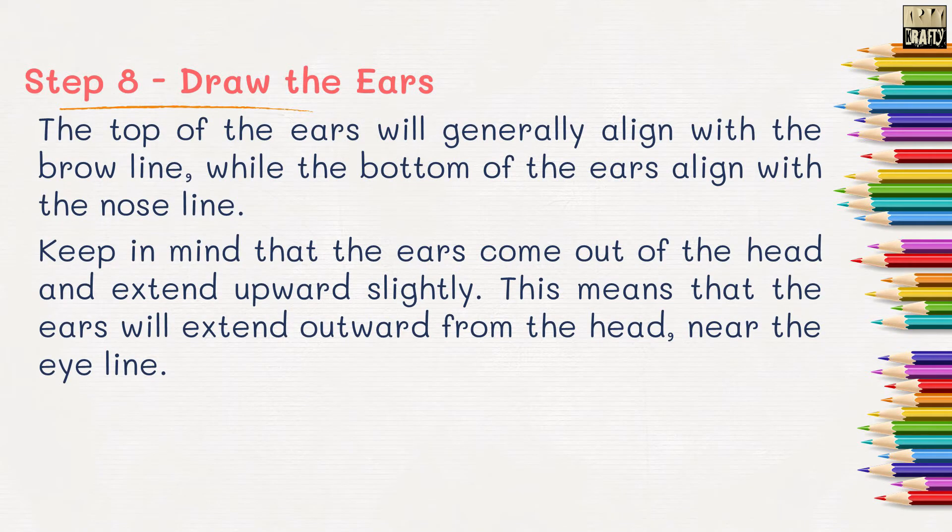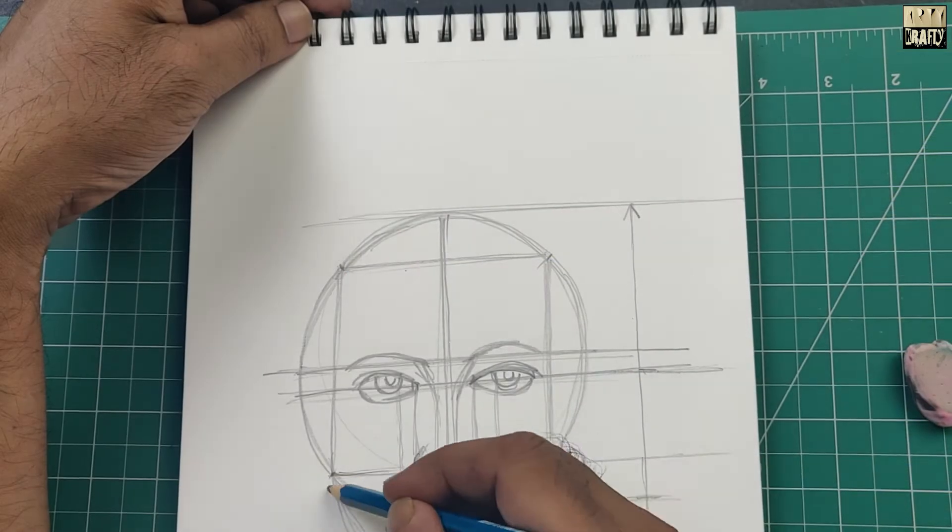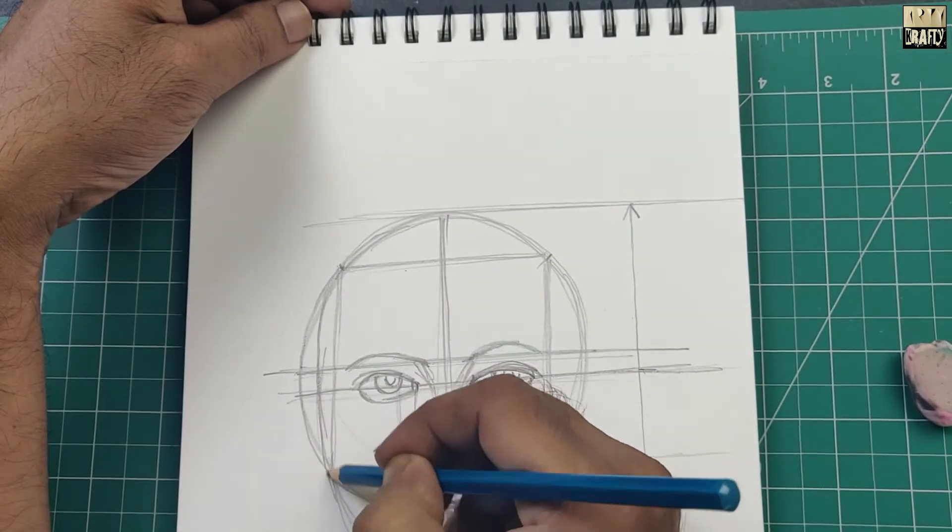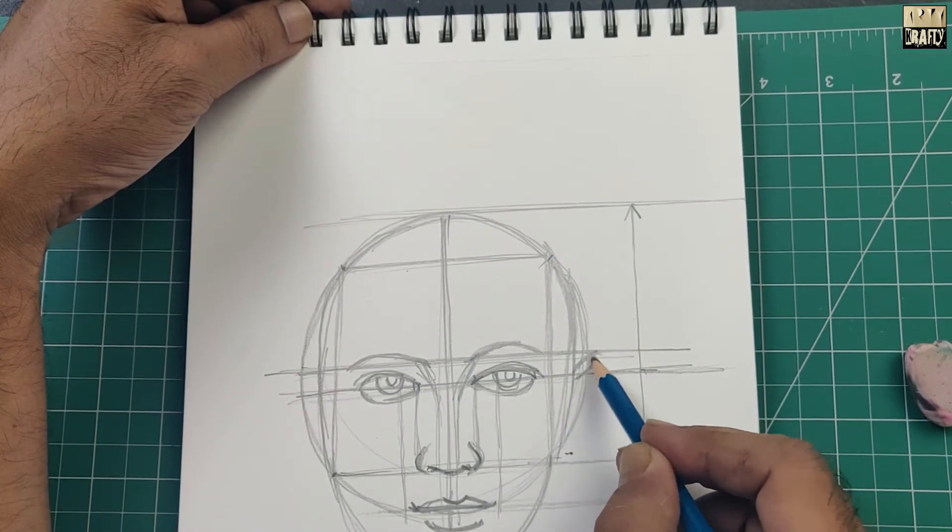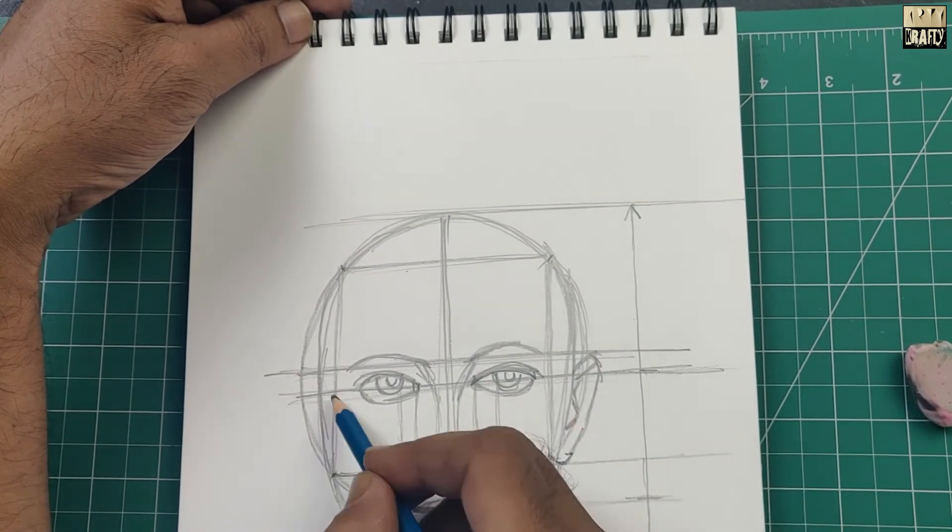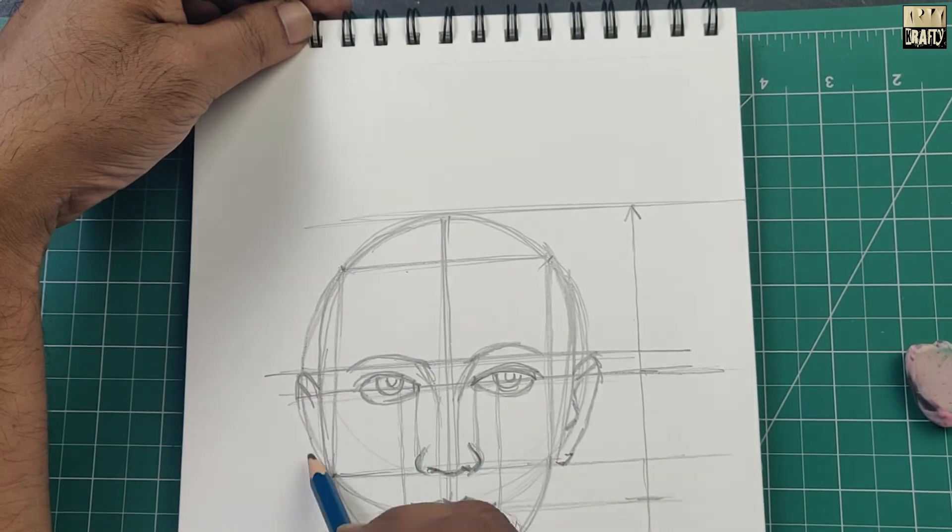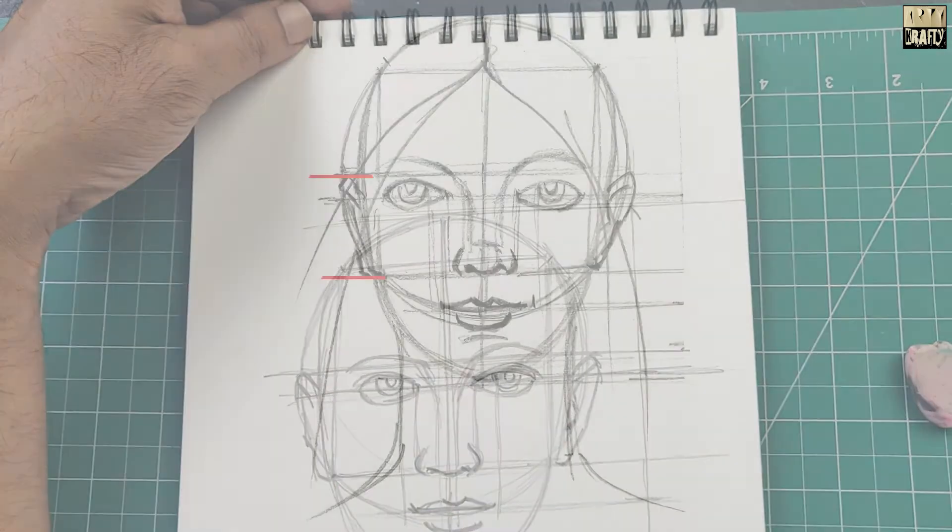Step 8. Draw the ears. The top of the ears will generally align with the brow line while the bottom of the ears align with the nose line.